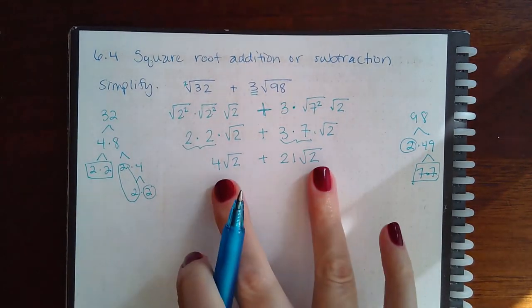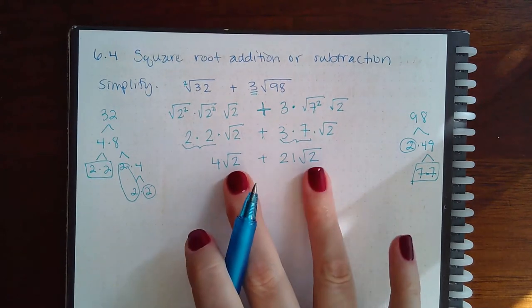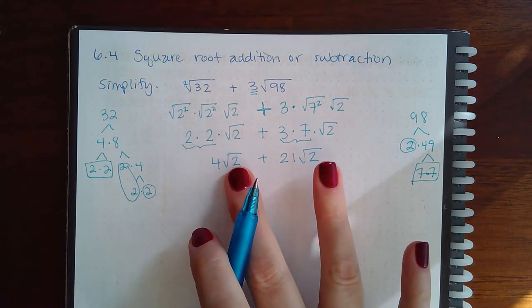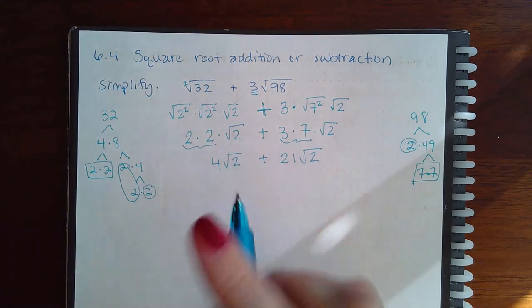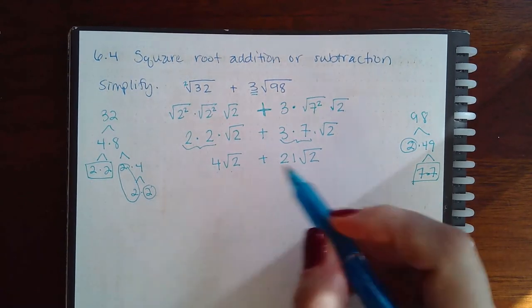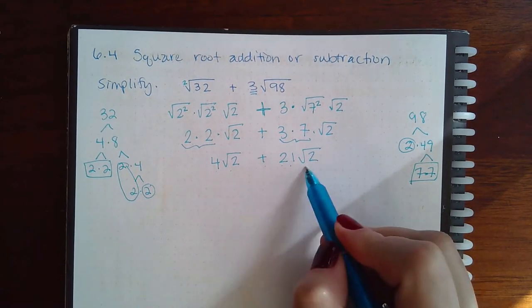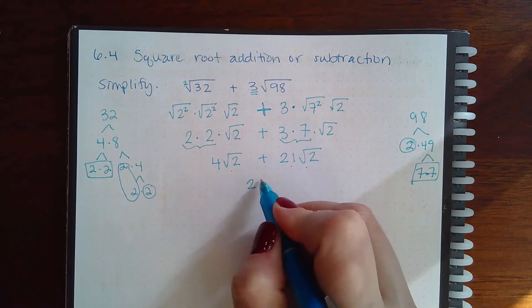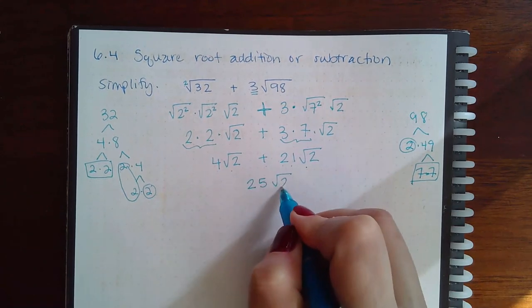And now they are like terms. They both have a radicand of two, so they both have a two inside the radical. So if I have 4 square root of 2's plus 21 square root of 2's, that means I'm going to have a total of 25 square root of 2's.